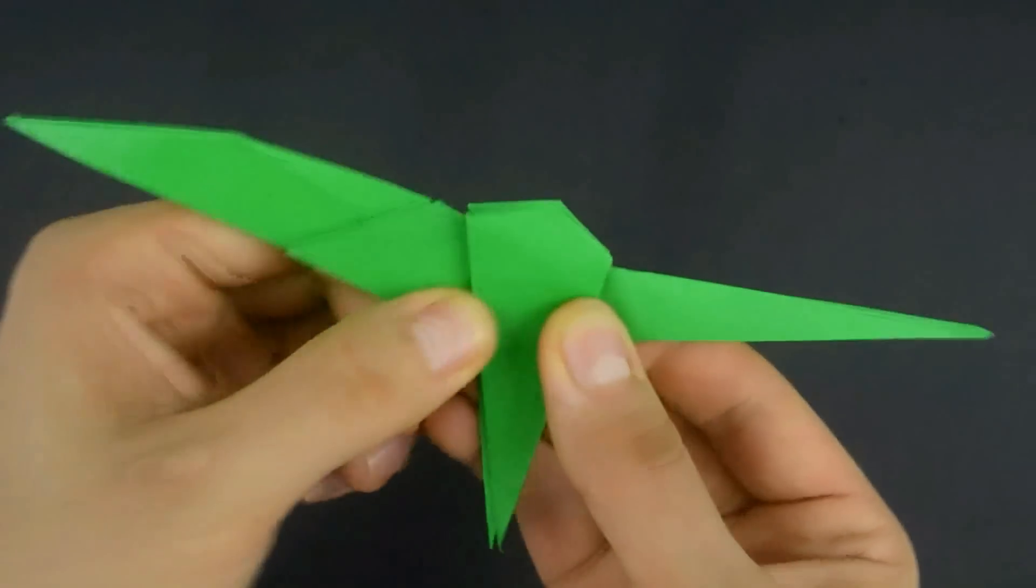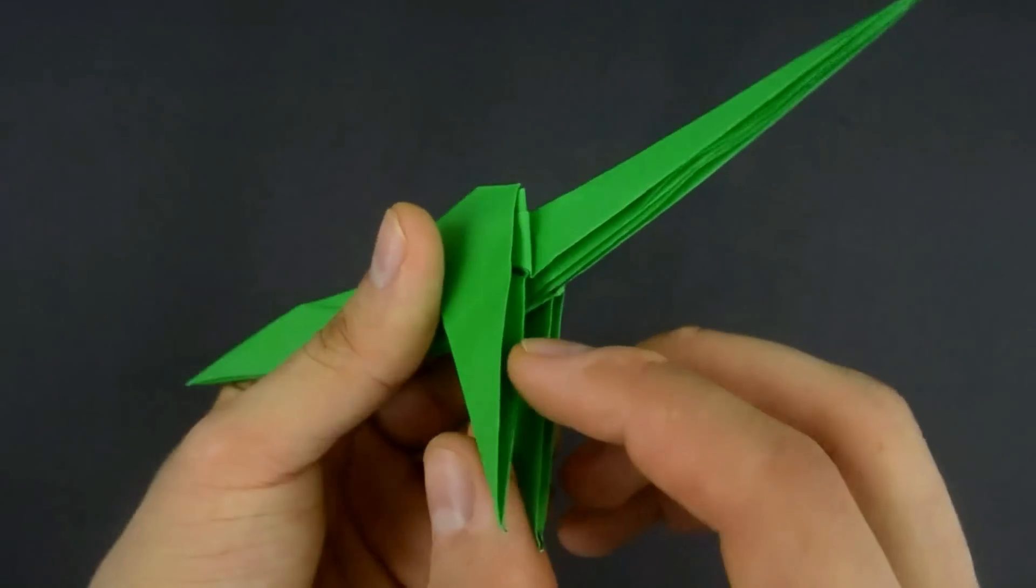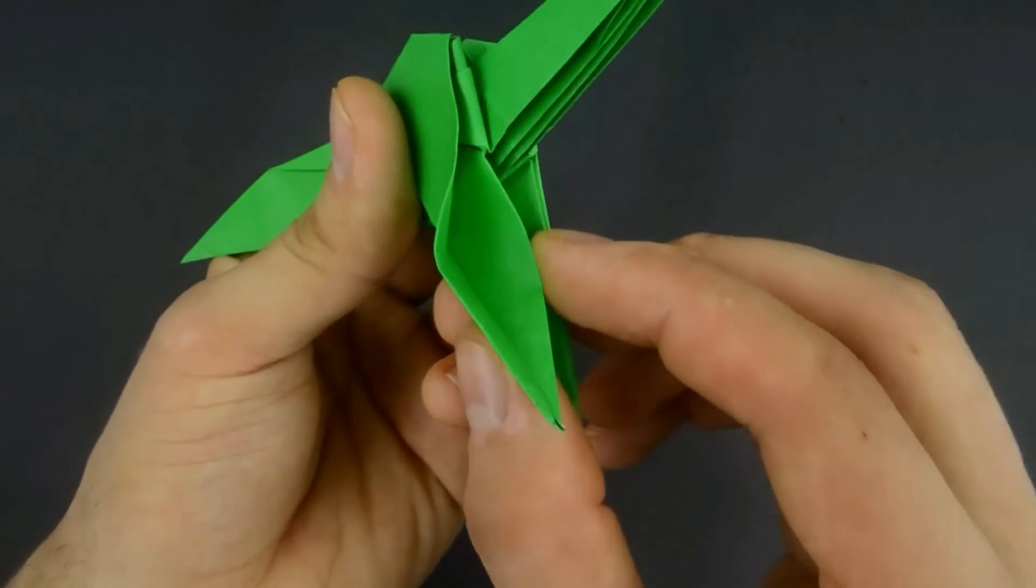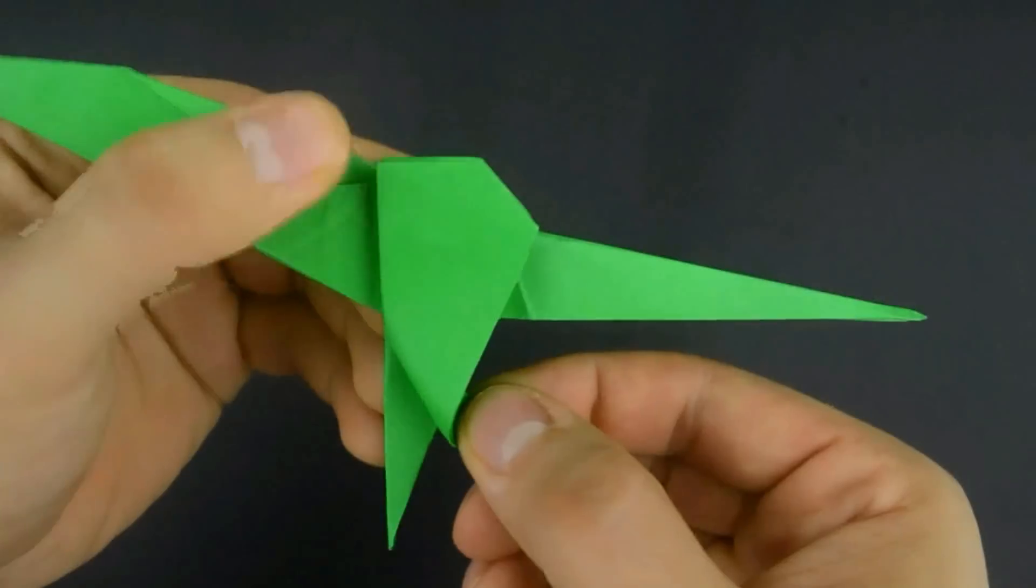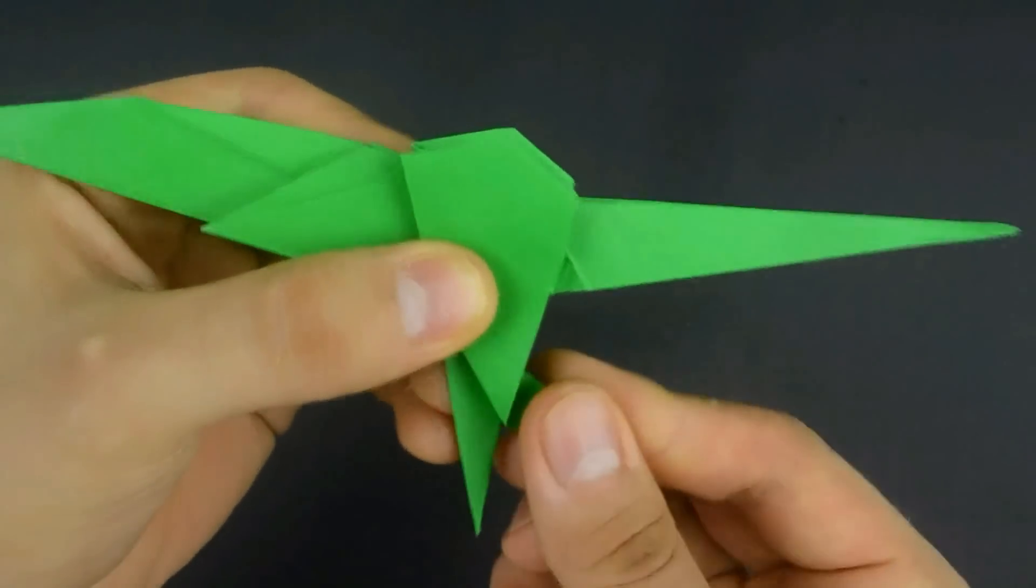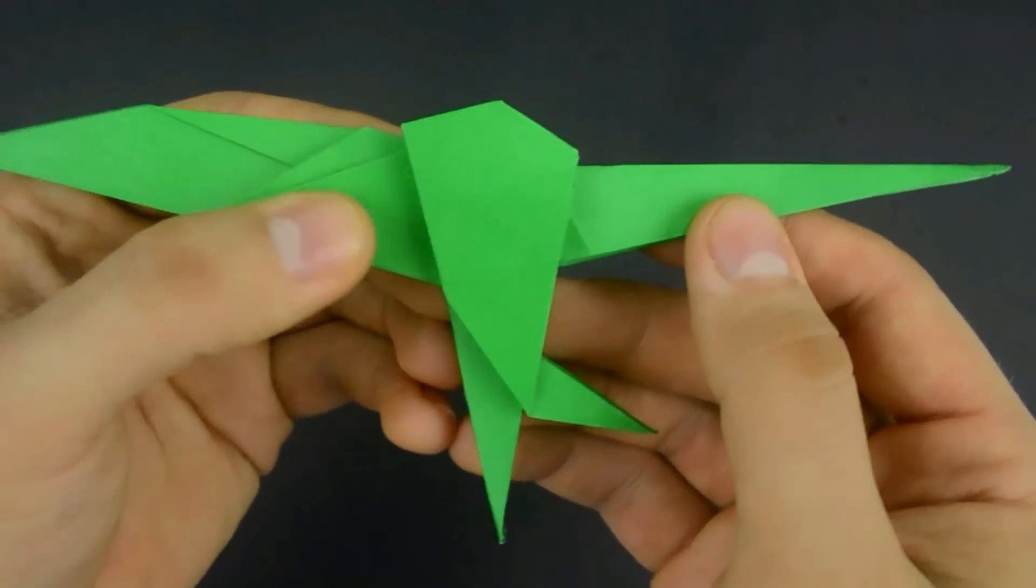Then to make the detail of the legs, first reverse this flap. That way. Repeat on the other side.